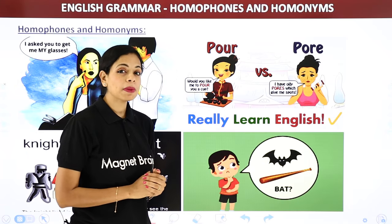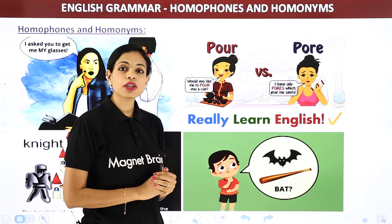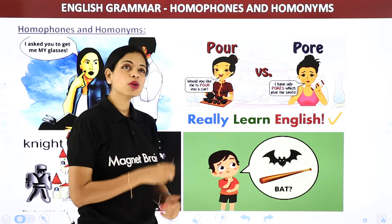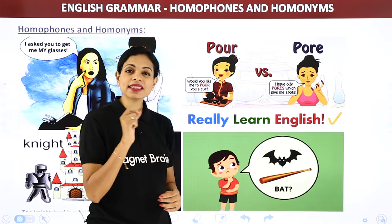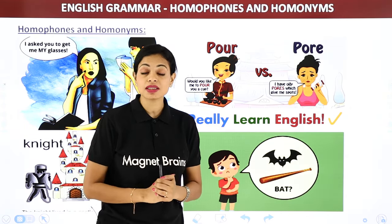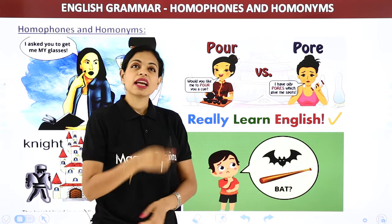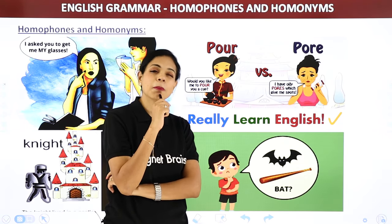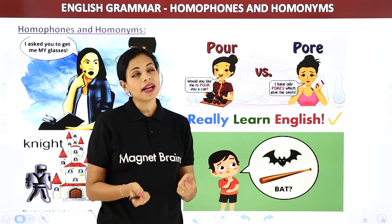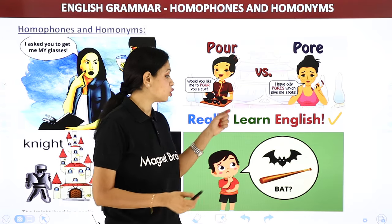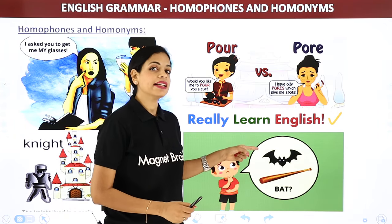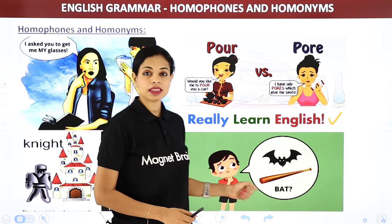Next, Papa said 'there was a bat in the sky.' The child is confused — how can a bat go in the sky? Because Papa was talking about the bird bat (chamgadad), but the child was thinking about the cricket bat.